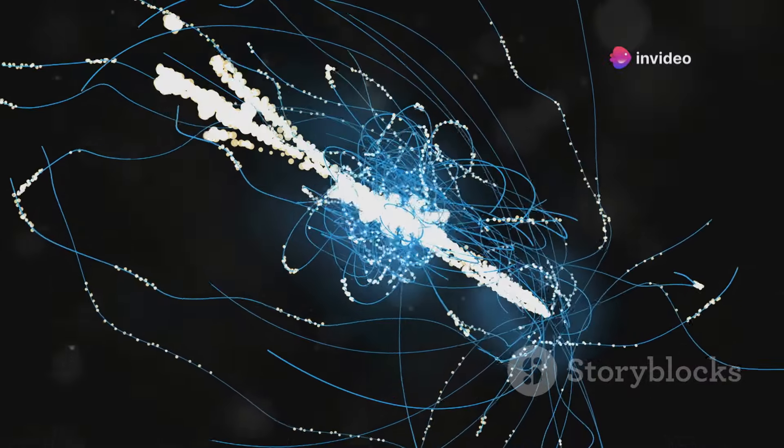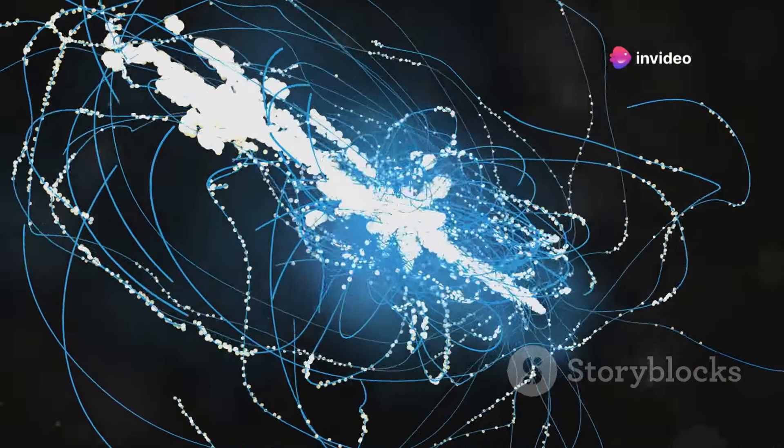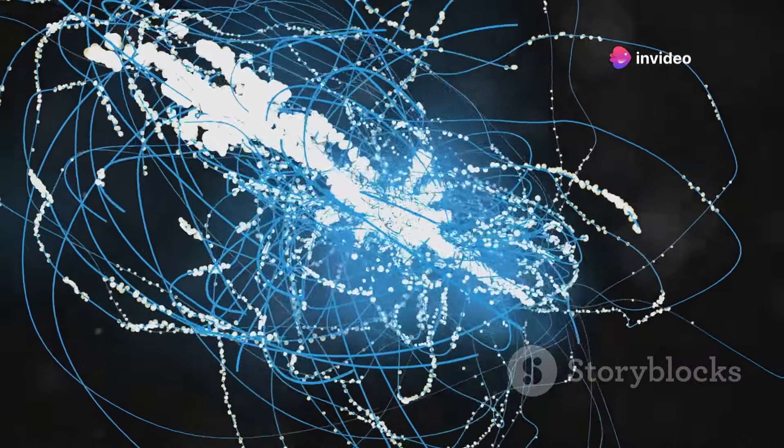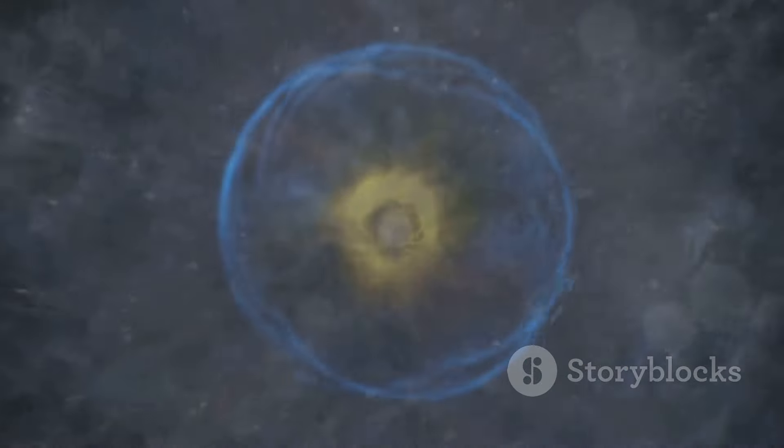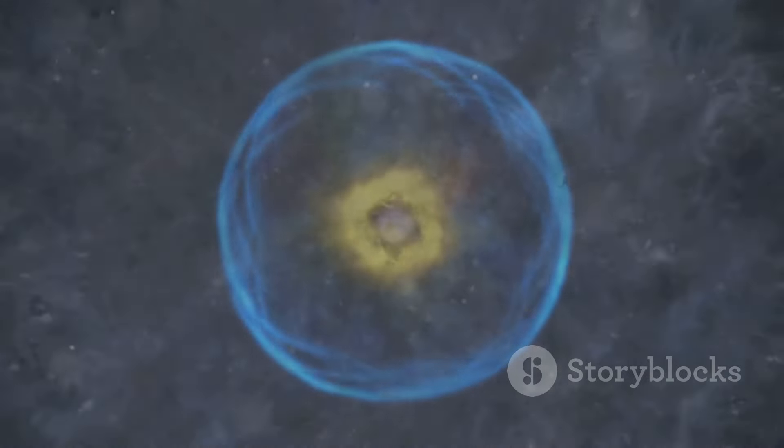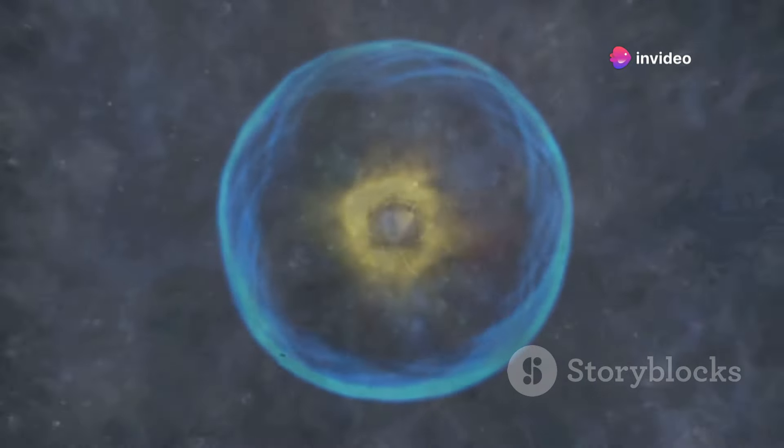The relentless force of dark energy would continue its rampage. As dark energy intensifies, it would start to rip apart smaller and smaller structures. No structure, no matter how small, would be safe. Stars, those giant balls of burning gas, would be torn limb from limb, their nuclear furnaces extinguished in the vast emptiness of space. Their light would fade forever. Planets, like our own Earth, would be next. The very ground beneath our feet would disintegrate. The atoms themselves ripped apart by the relentless force of dark energy. The building blocks of matter would be torn asunder.